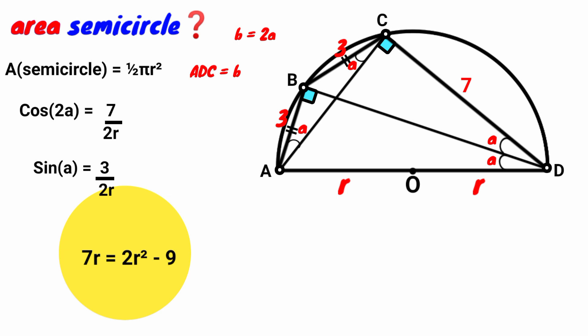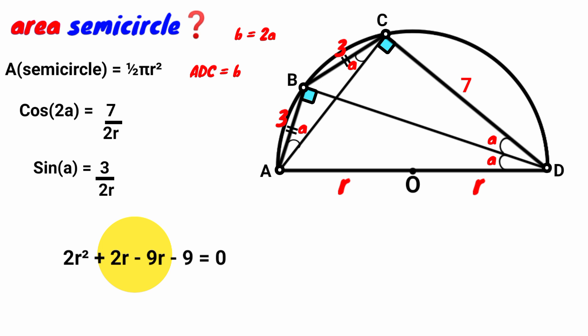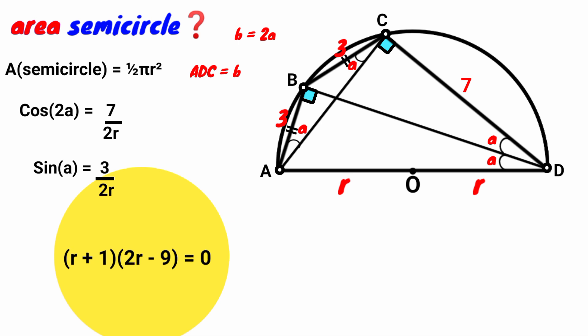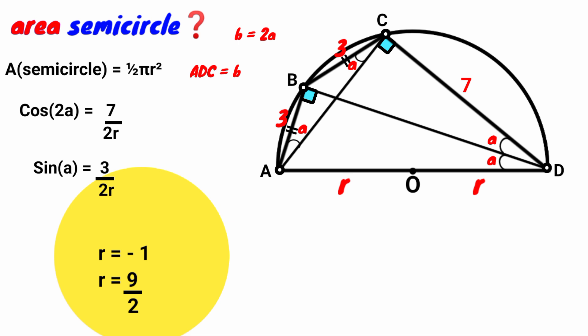Multiplying through by 2R²: 7R = 2R² − 9. Bringing 7R to the right: 2R² − 7R − 9 = 0. This is a quadratic equation. We solve by factorization: −7R can be written as +2R − 9R, giving 2R² + 2R − 9R − 9 = 0. Factor 2R from the first pair: 2R(R + 1), and factor −9 from the second pair: −9(R + 1). So (R + 1)(2R − 9) = 0, meaning R + 1 = 0 or 2R − 9 = 0, giving R = −1 or R = 9/2.